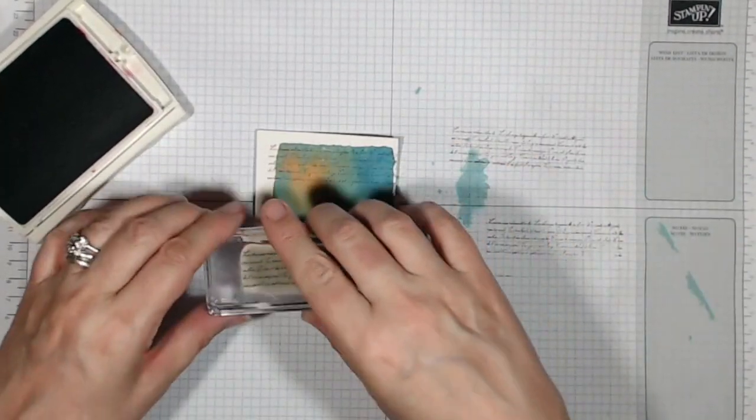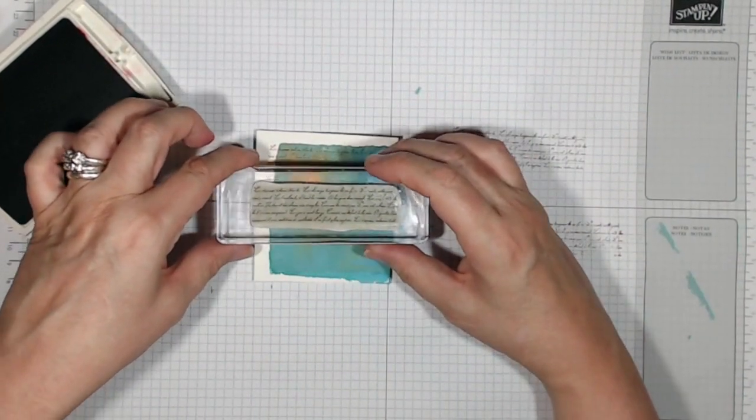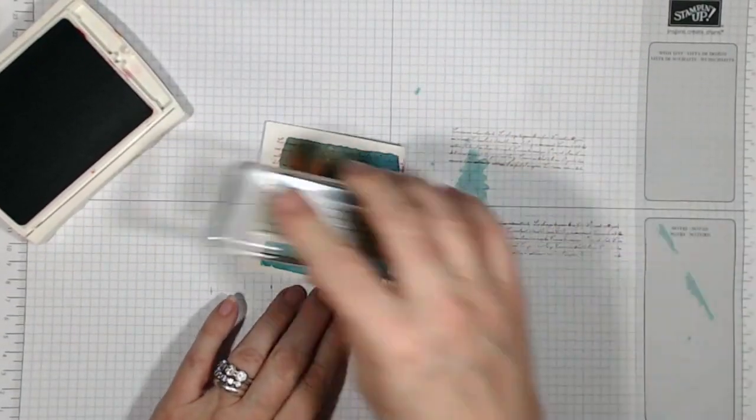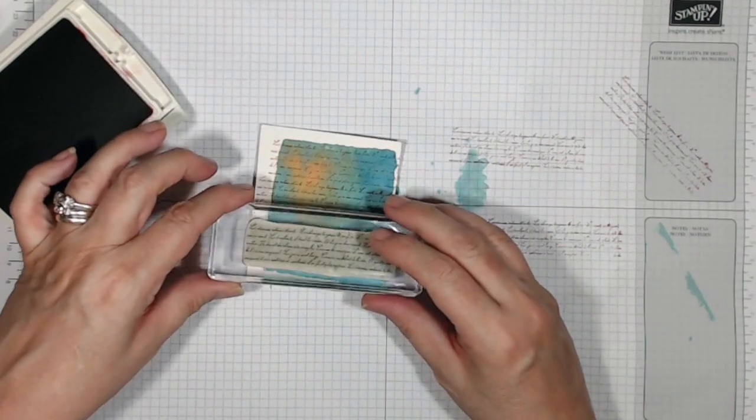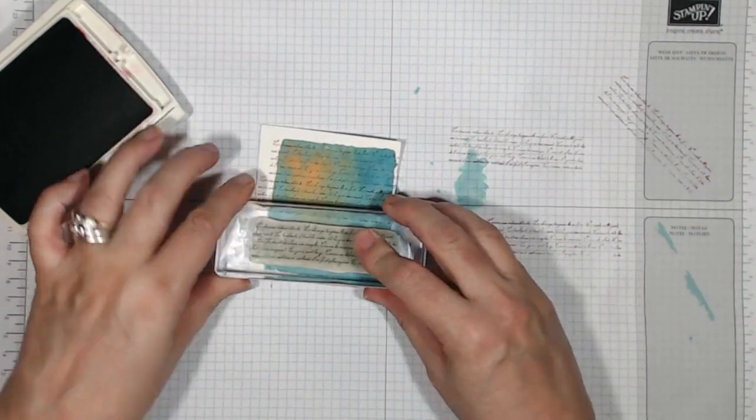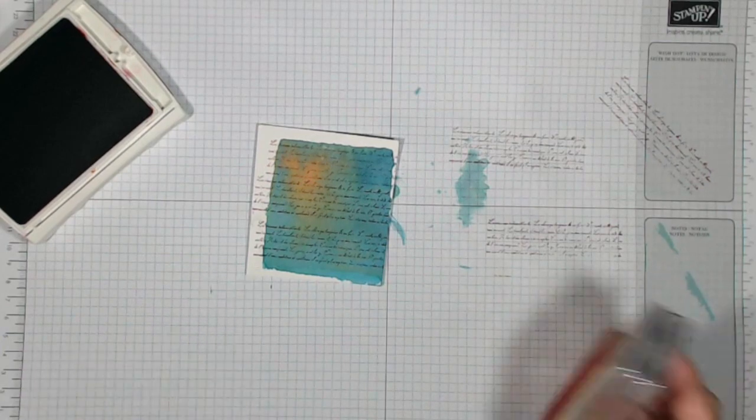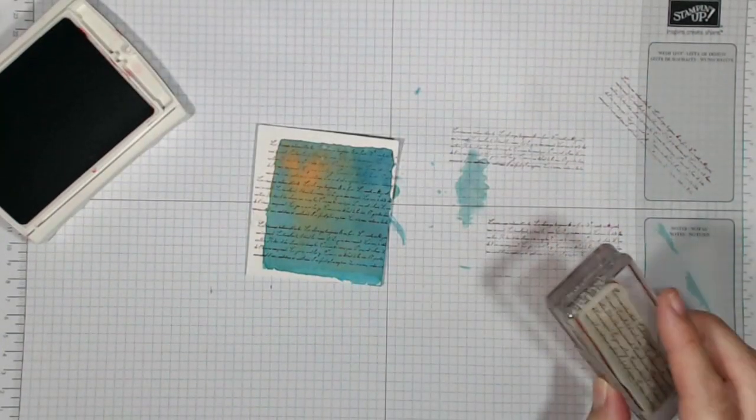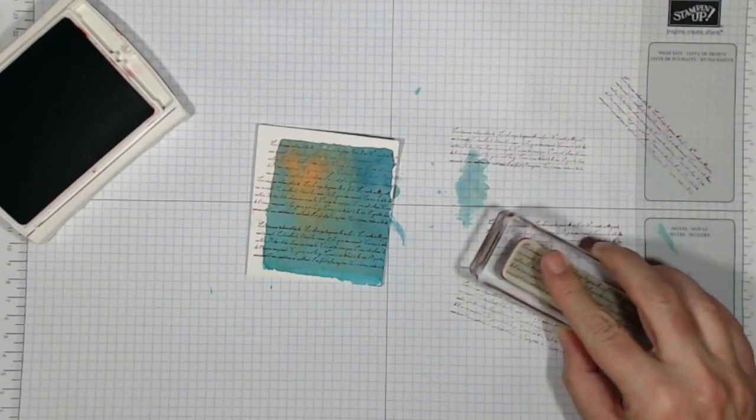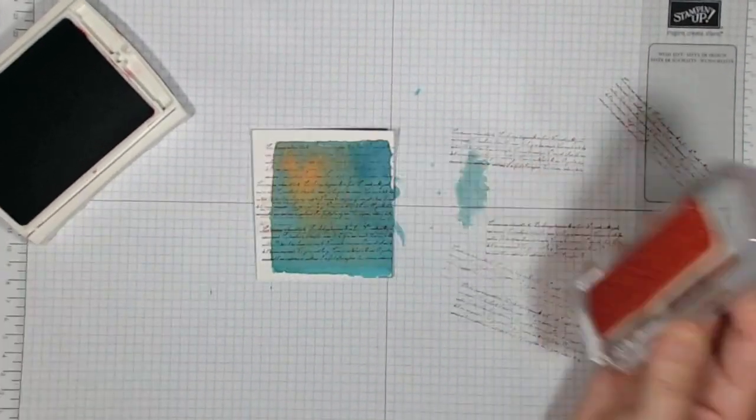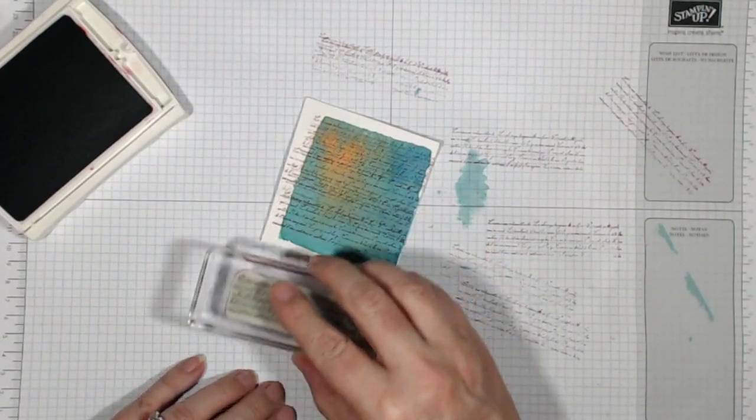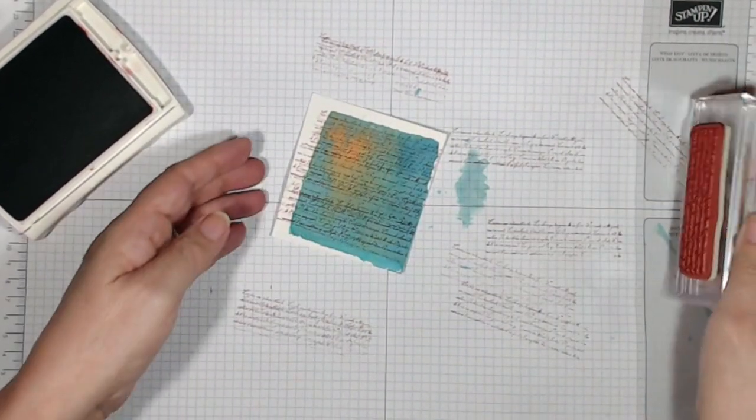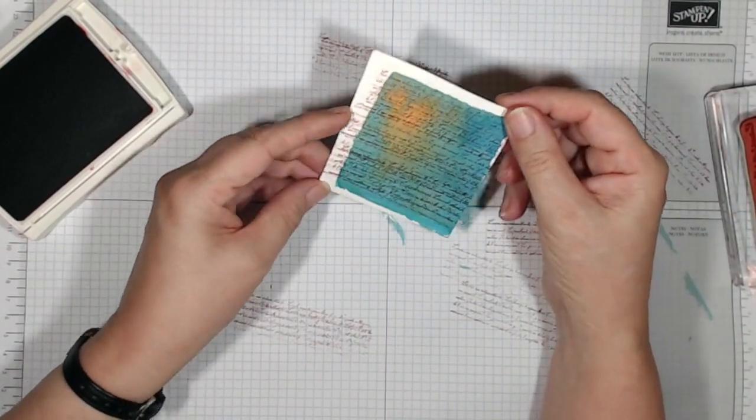I'm just going to stamp onto my watercolor card and repeat that until I've covered my background. There's a bit of a gap there, but I'm not going to worry unduly about that. I'll stamp off twice and fill that bit in. So I've got a very nicely grungy background.